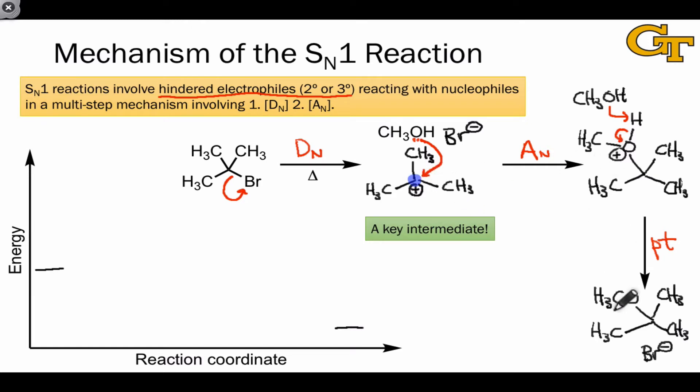In fact, we see two sets of intermediates, and thus we should expect three transition states, one for the DN step, one for the AN step, and one for the proton transfer, on the reaction coordinate diagram.